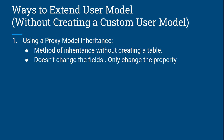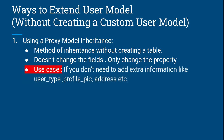If you use the proxy model in inheritance, it doesn't change the fields — it only changes the properties. For example, a user has a table with first name, last name, or email. The fields don't change; only the property changes. In the model, you can define functions and define properties — you can change the property.